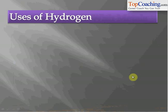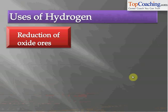What are the uses of hydrogen gas? Hydrogen is popularly used in the reduction of oxide ores — since it is a reducing agent, it reduces oxide ores to give the proper metals. For example, hydrogen reacts with iron oxide ore to produce iron metal, taking up the oxygen to form water.